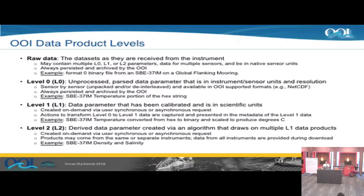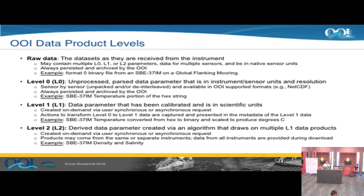There are a couple different data product levels. Raw data is as received from the instrument in instrument format, or in the native sensor format of the computer the instrument is plugged into. Level-zero data is unprocessed but parsed, packaged up into an engineering or science stream. Level-one data is processed and calibrated in science units like temperature in degrees Celsius. Level-two would be a derived parameter from multiple instruments or single instrument with multiple parameters, like density or salinity. These terms are derived from originally NASA terminology.